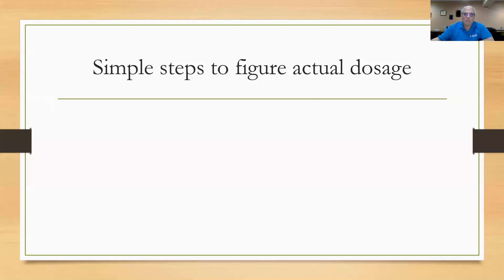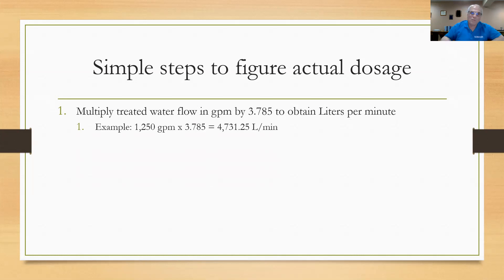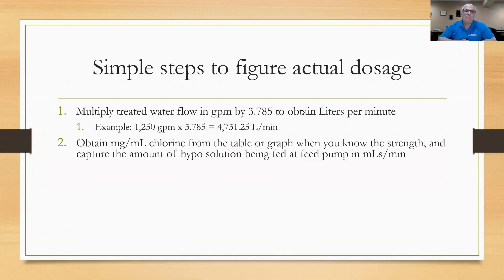Here are some simple steps to figure the actual dosage. Step one: multiply the treated water flow in gallons per minute by 3.785 to get liters per minute. For example, if I'm treating at 1,250 gallons per minute, multiplied by 3.785 gives a treated rate of 4,731.25 liters per minute. I know it's metric and a lot of people don't like metric, but follow along — it's really easy. Then obtain milligrams of chlorine per milliliter from the table: remember that 12% gives 120 milligrams per milliliter because we multiply by 10.